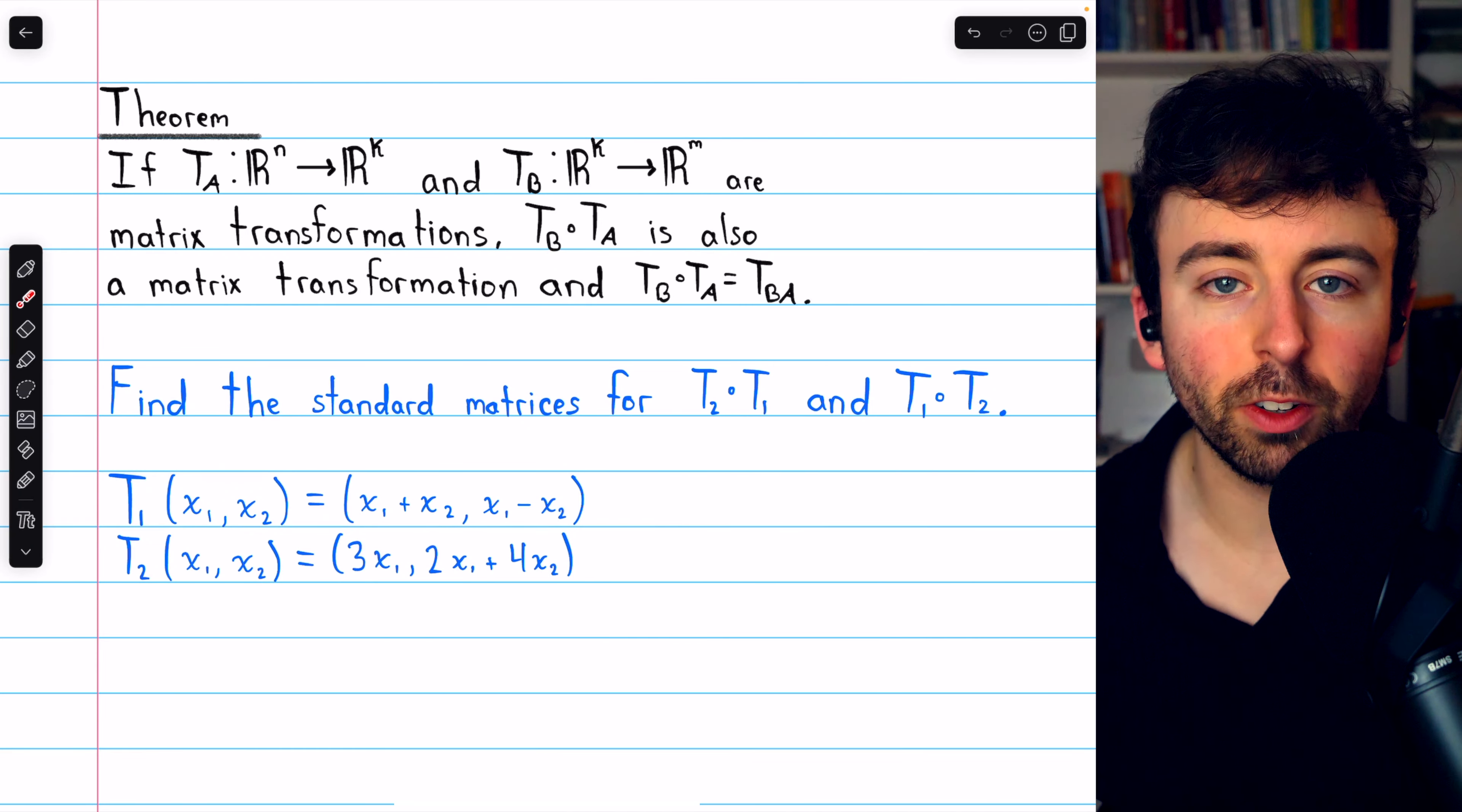Thus, the standard matrix of T1 we find by just taking these transformed images as columns, and there we go. That is, we'll call it A, the standard matrix for T1.